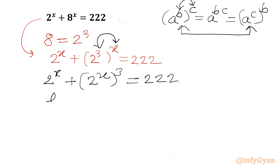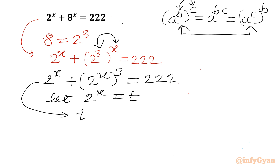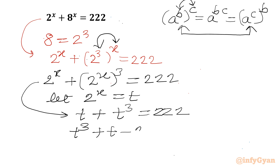Now I will use the substitution 2^x = t. Then this exponential equation will become cubic: t + t³ = 222.